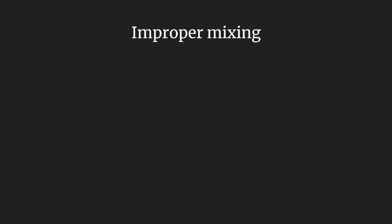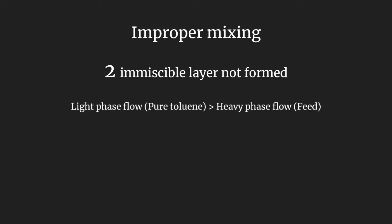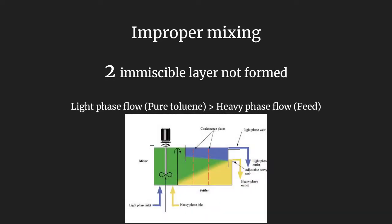Besides, improper mixing did occur. During the experiment, two distinct layers could not form during the mixing, due to the lack of knowledge in operating the mixer-settler. The heavy phase, which is the feed, flowed too slowly compared to the light phase, causing only pure toluene in the mixer. The blue color of the inlet dominated the mixer-settler and flowed through the heavy phase outlet, which is the yellow-colored stream. Efforts to overcome this problem required the technician to help in adjusting the valve and flow rate of the feed. Thus, the readings of run 1 and 2 are not very accurate. The valve on the mixer had to be adjusted from time to time to allow equal flow rate of extract.